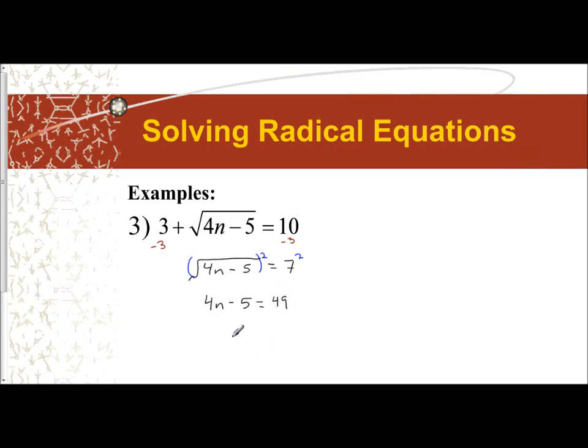I would add 5 to get 4n equals 54, and then divide by 4. When you divide by 4, 54 fourths can be simplified into 27 halves.